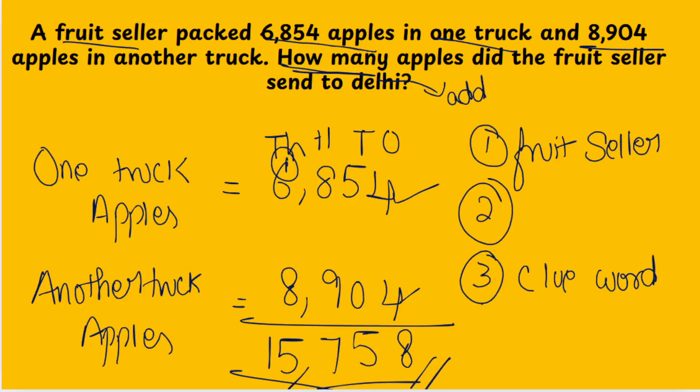So the first thing you are going to do is analyze the story. Second: underline the numbers. Third: find out the clue word. Fourth: add the numbers and get the answer. It is very easy. This is how you are going to do all the upcoming word problems. Let us do some exercise-based sums in the next section.